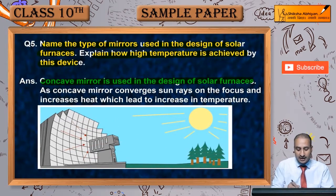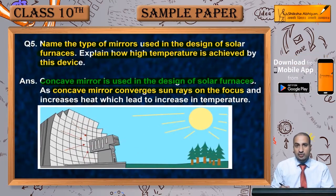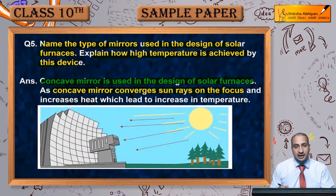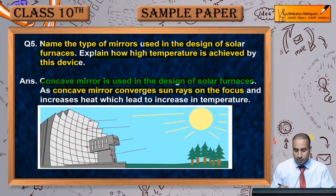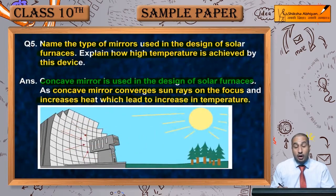As the concave mirror converges sun rays on the focus — concave mirror sun rays ko focus mein converge karta hai. Sun rays infinite distance se aati hain, isliye focus par saari sun rays converge ho jaati hain, jisse heat mein increase hota hai, which leads to a very high increase in temperature.